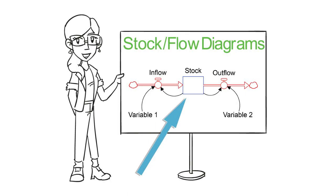Key stocks or accumulations are identified with a box. These stocks can go up and down based on their flows or rates of change.